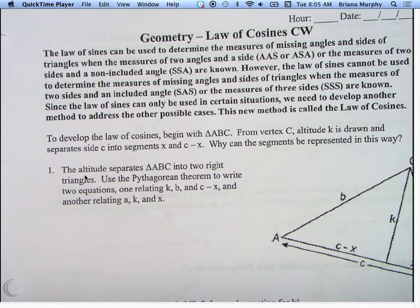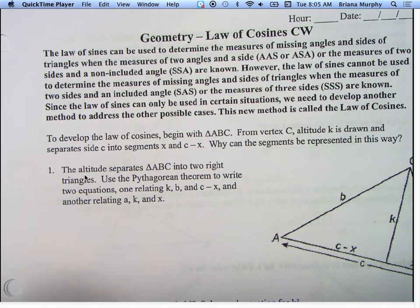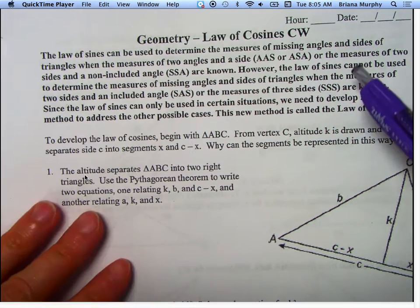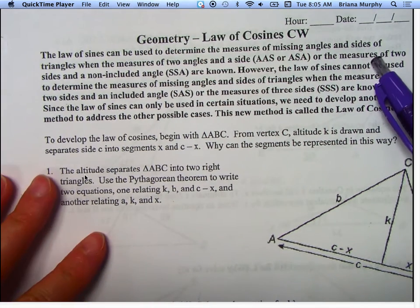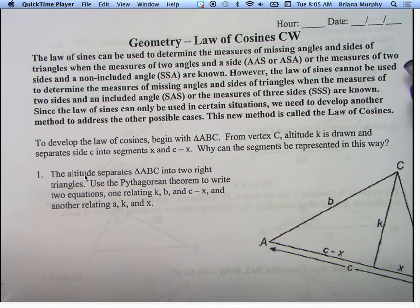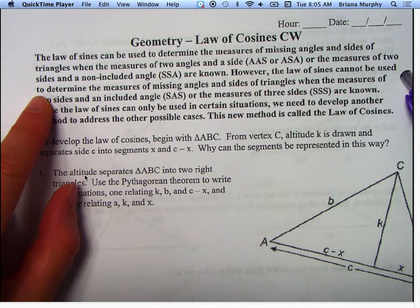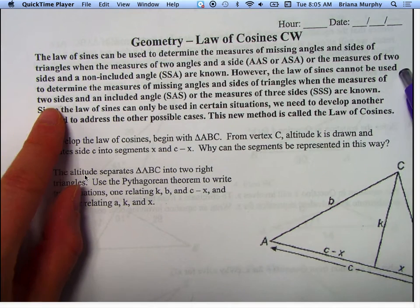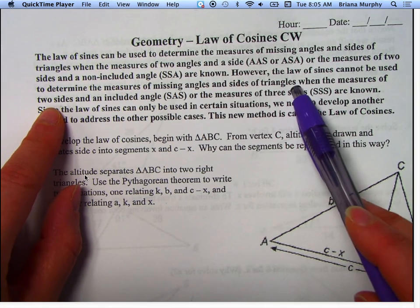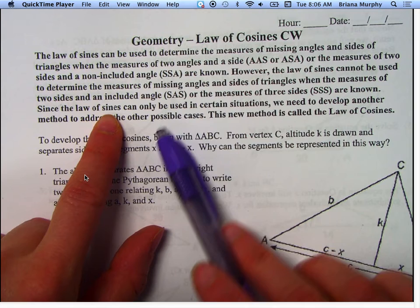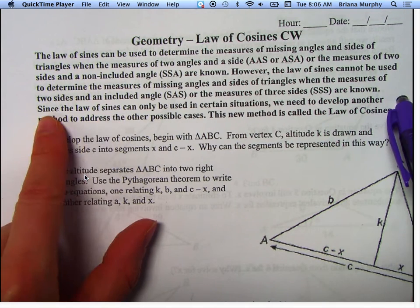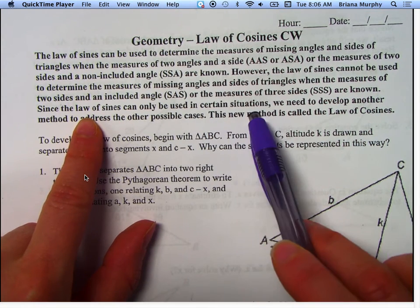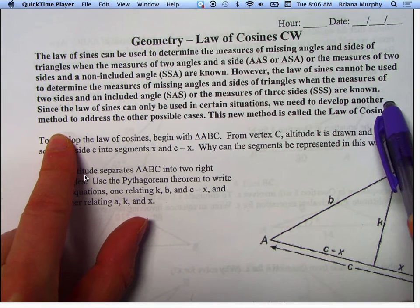How we got the law of cosines in the first place. The law of sines can be used to determine the measures of missing angles and sides of a triangle when the measure of two angles and a side — angle-angle-side or angle-side-angle — or the measures of two sides and a non-included angle — side-side-angle — are known. However, the law of sines cannot be used when the measure of two sides and an included angle, or the measure of three sides are known. Since the law of sines can only be used in certain situations, we need to develop another method.